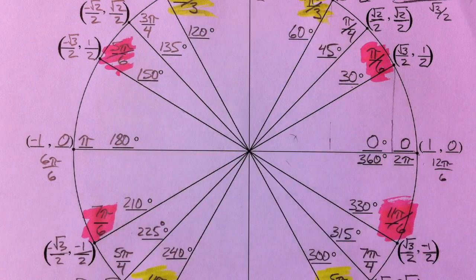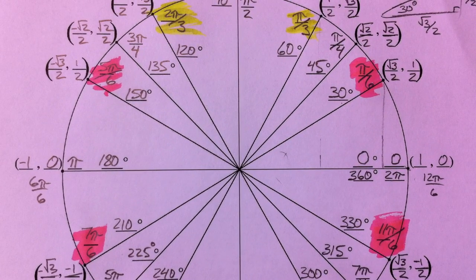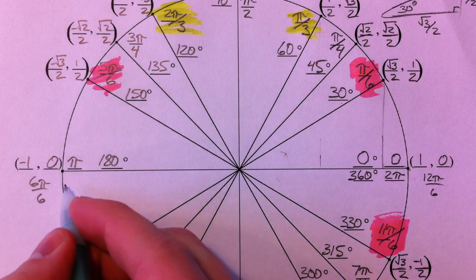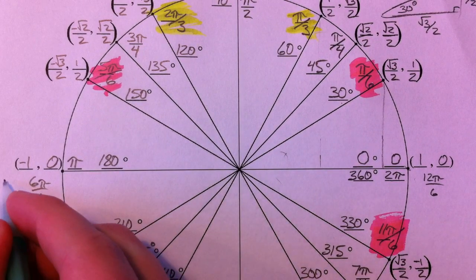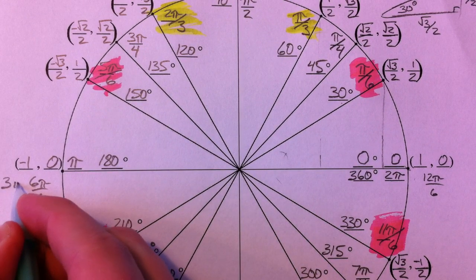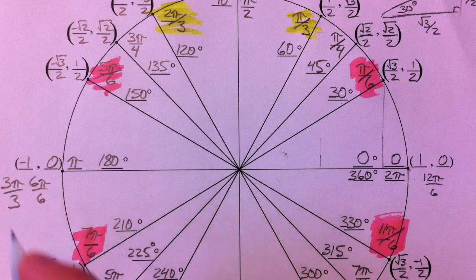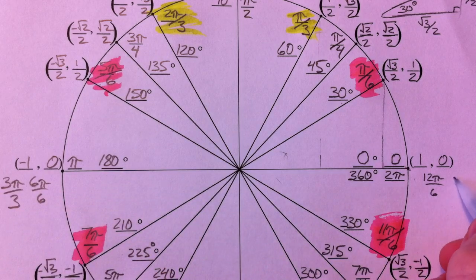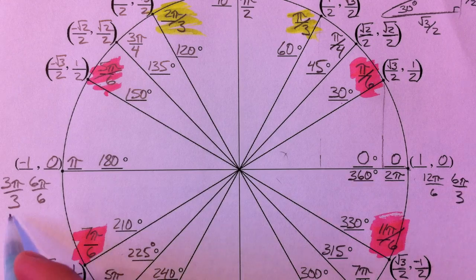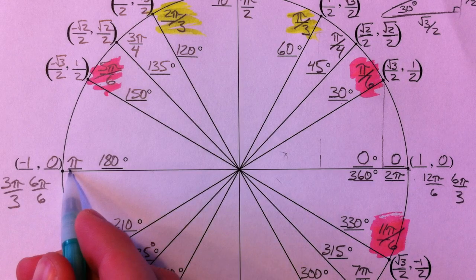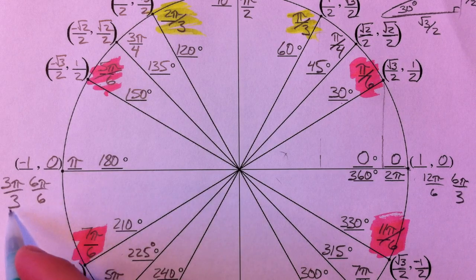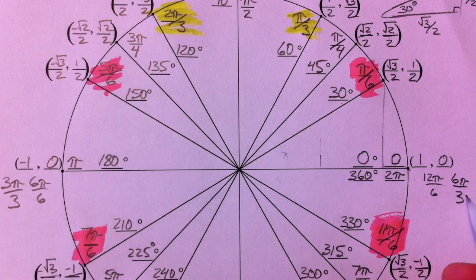Realize that you can compare them to three pi over three and six pi over three. Three pi over three is the same as pi but expressed with a denominator of three, and six pi over three is two pi expressed with a denominator of three.